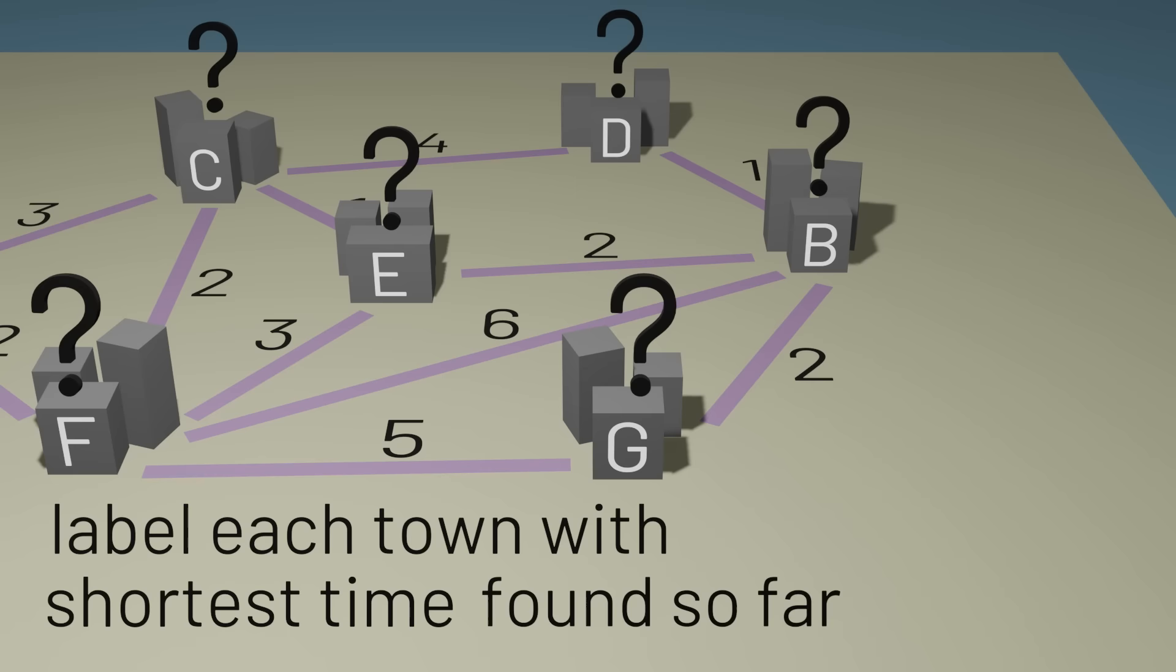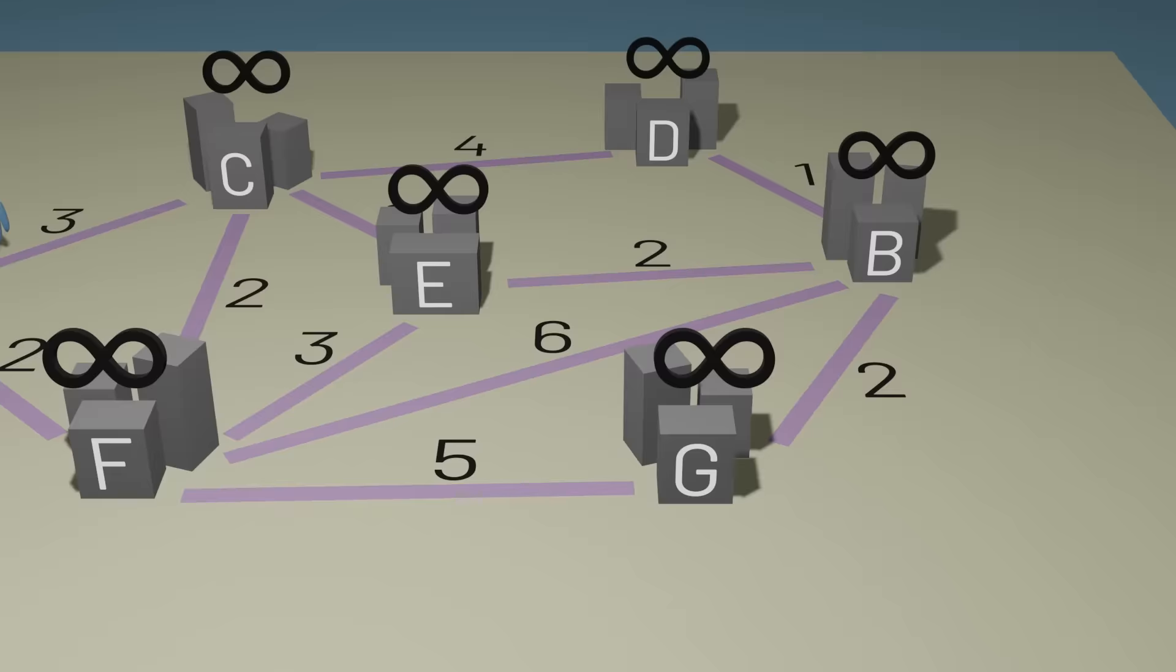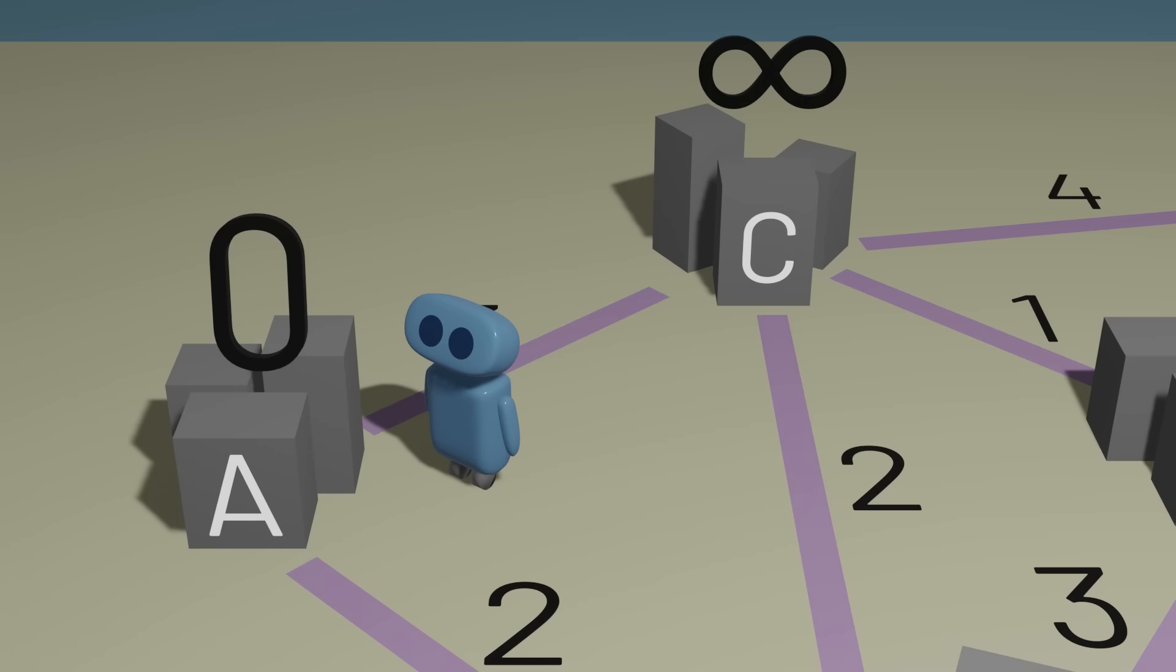Before we've started the algorithm, we don't have any known way of getting to the towns, so we'll label them all with infinity. The only town that we can label correctly is our source, town A, which we can easily label. We're starting there, so it takes zero minutes to get to this town.